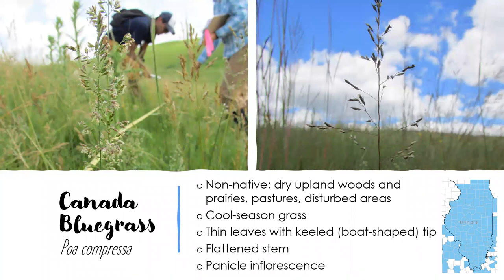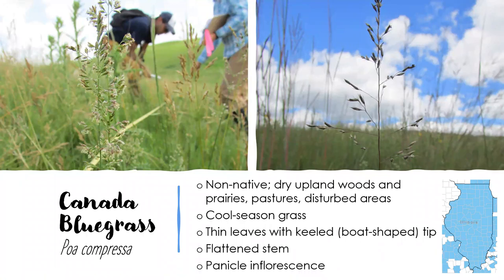Canada bluegrass, Poa compressa, has a lot of the same characteristics as Kentucky bluegrass. It tends to be found in slightly higher quality habitats — more dry upland woods and prairies — but can also be in pastures and disturbed areas. It has those thin leaves with the boat-shaped tip, but the key distinction is that the stem is flattened or compressed — you get that from the Latin name compressa. Instead of being round like Kentucky bluegrass, you can tell the stem is flattened when you roll it between your fingers. It has a panicle inflorescence just like Kentucky bluegrass.